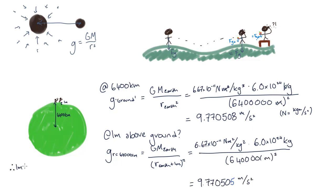An acceleration due to gravity of 9.770505 meters per second squared. So the difference in gravitational field strength when you move one meter above the ground is 3 times 10 to the minus 6 meters per second squared, or three millionths of a meter per second squared. As you can see, this is a very small difference.